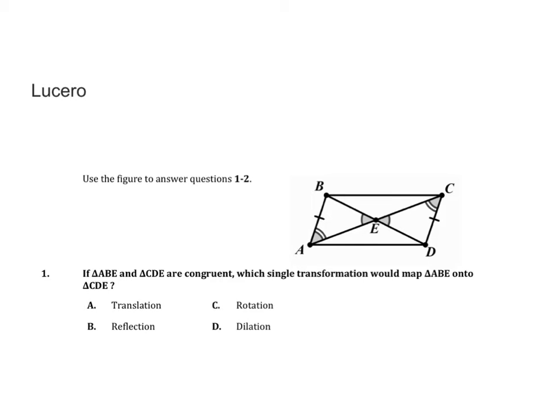In this question, I need to find which single transformation would map ABE into CDE. I need the angles ABE and ACD. The single transformation is a rotation of 180 degrees.